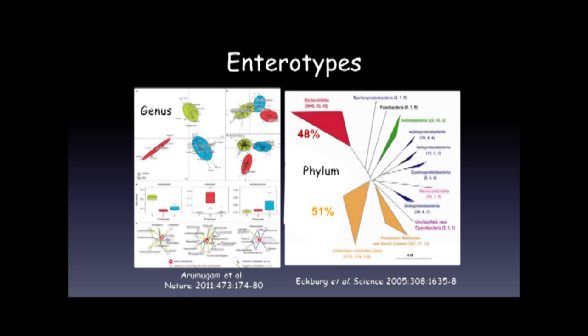Moving down to a genus level, the European consortium suggested that even though there is tremendous variability between individuals, if we look at genus level, there is some clustering of individuals into what they call three enterotypes, which are driven by particular genera. They suggest that whether your dominant genus is Bacteroidetes, Prevotella, etc., is probably largely driven by your diet.